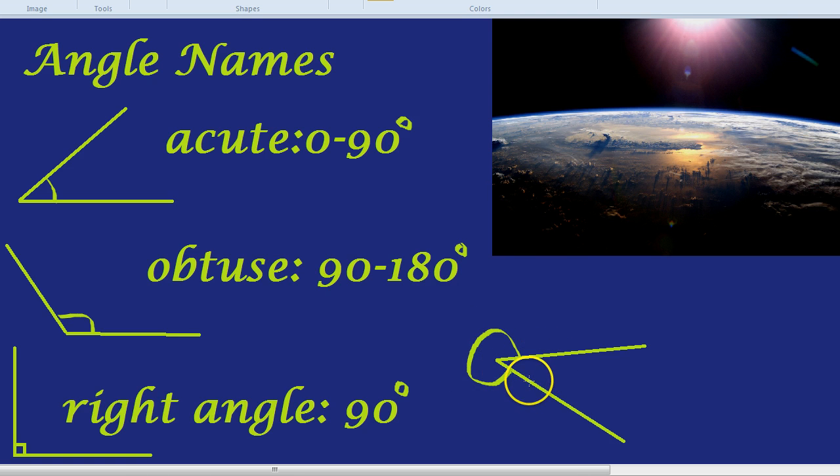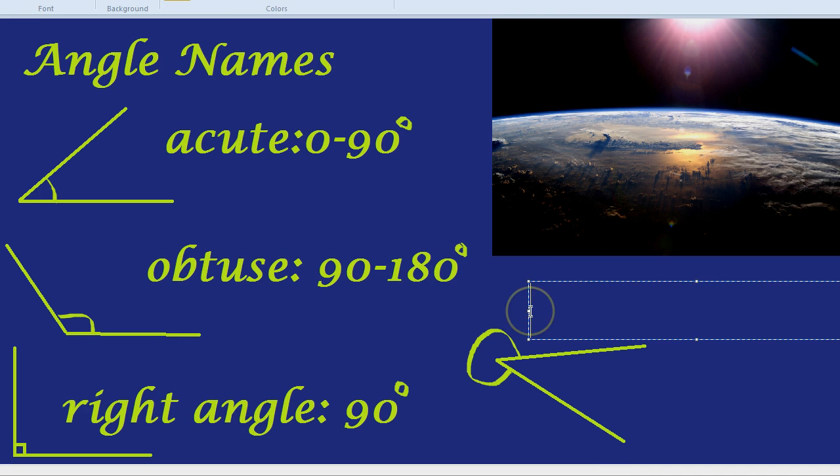And you're right, the inside angle would be acute. But what about the angle going all the way around the outside? That is actually called a reflex angle.